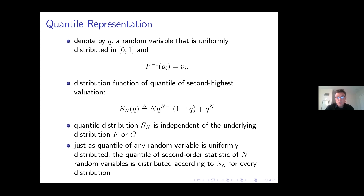We can also think about the distribution function of the quantile of the second highest valuation — that is S_n — where the subscript alerts us that this distribution depends on the number of samples n. S_n is an expression that, just as the quantile itself, is independent of the underlying distribution F or G. We can write the revenue as an expectation over quantiles using the measure S_n. After integration by parts, we can represent the same revenue maximizing problem in terms of the second order statistic, now in terms of just the underlying distribution G inverse — that's the quantile — subject to this new constraint.